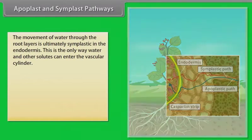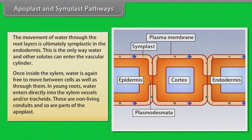Once inside the xylem, water is again free to move between cells as well as through them. In young roots, water enters directly into the xylem vessel and/or tracheids. These are non-living conduits and so are parts of the apoplast.